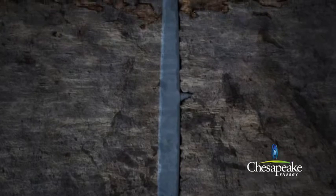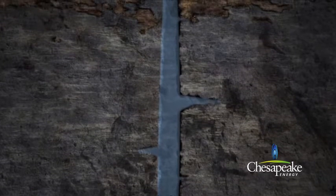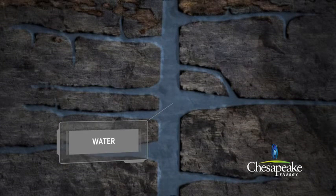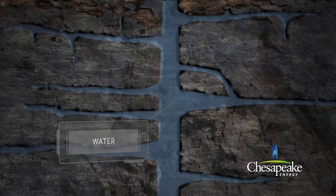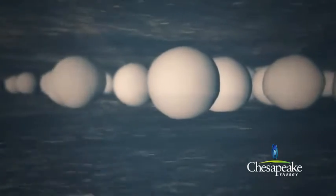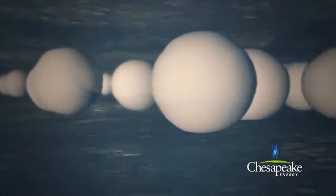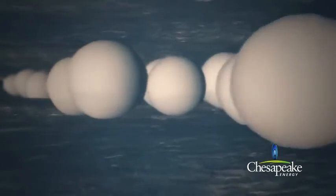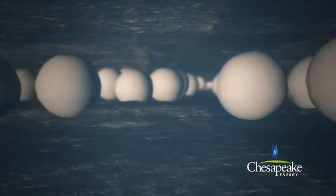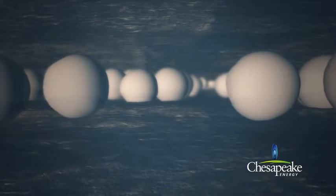Additional fractures are created along natural zones of weakness in the shale. These fractures are contained within the shale formation, well below the ground. After an initial stage of fluid called the pad is pumped to create a fracture area, proppant is added to the fluid and is distributed throughout the newly created fracture network.